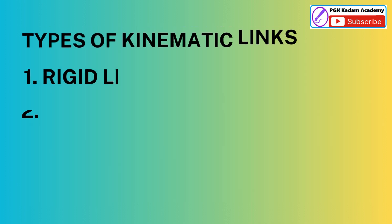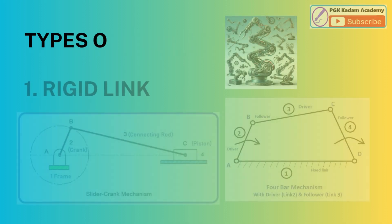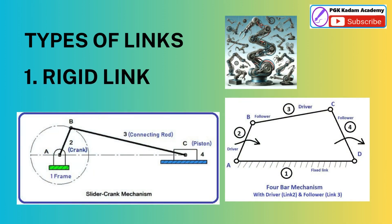A Kinematic Link, or resistant body, is one which does not undergo deformation while transmitting force. It can be divided into three types: Rigid Link, Flexible Link, and Fluid Link. A Rigid Link is one in which there is no deformation while transmitting motion. The motion between the piston and crank can be considered a rigid link.